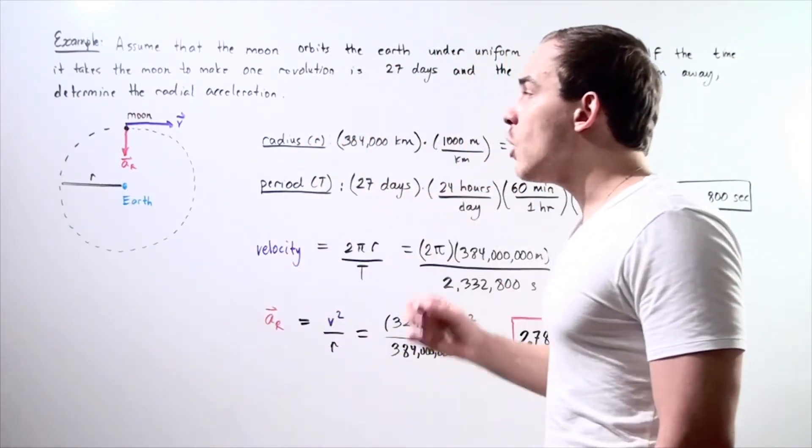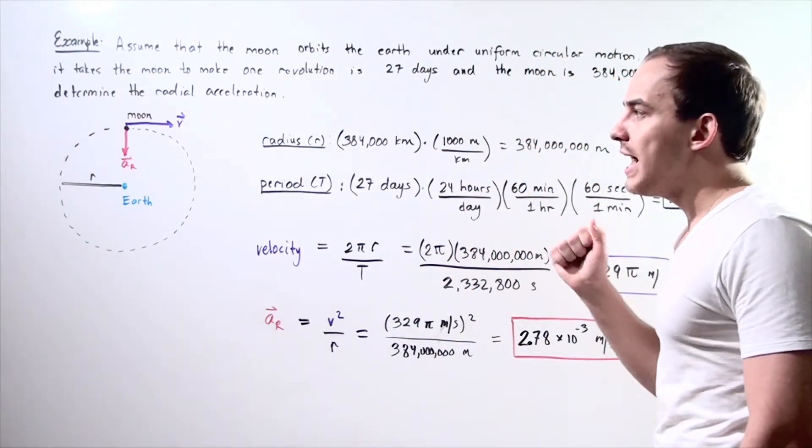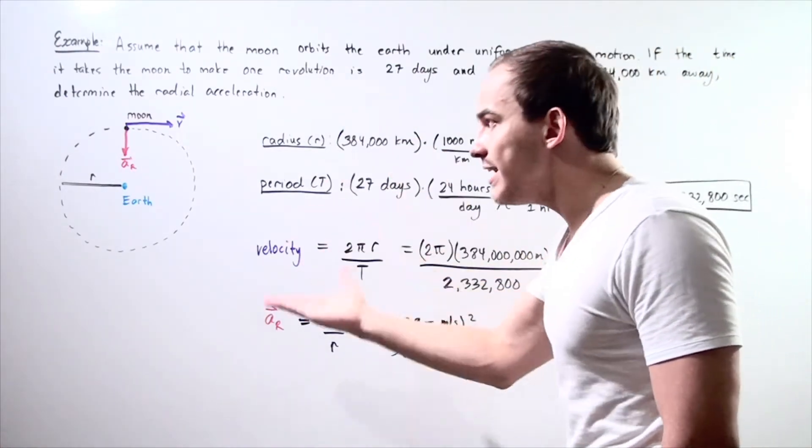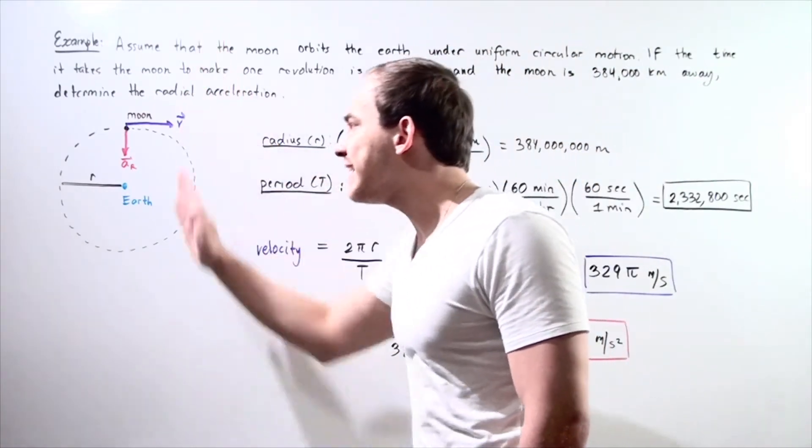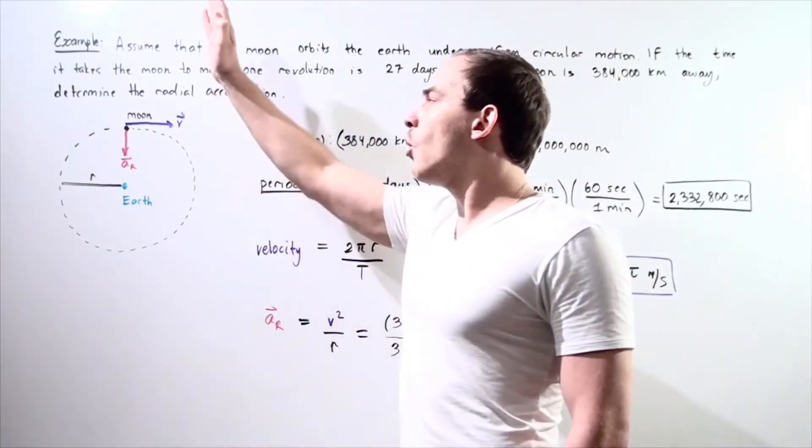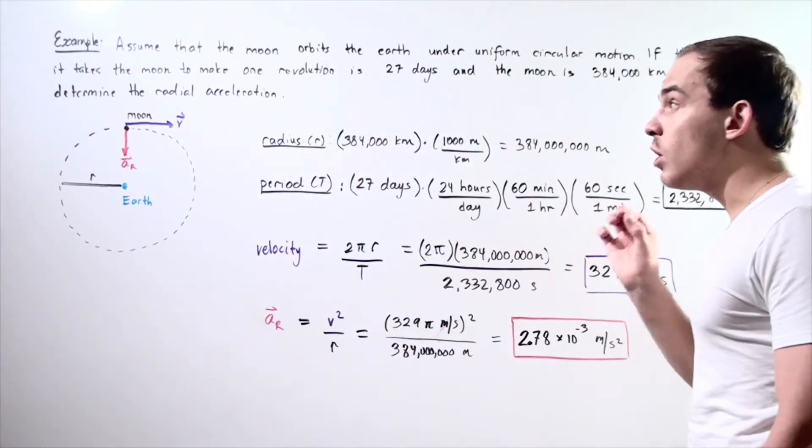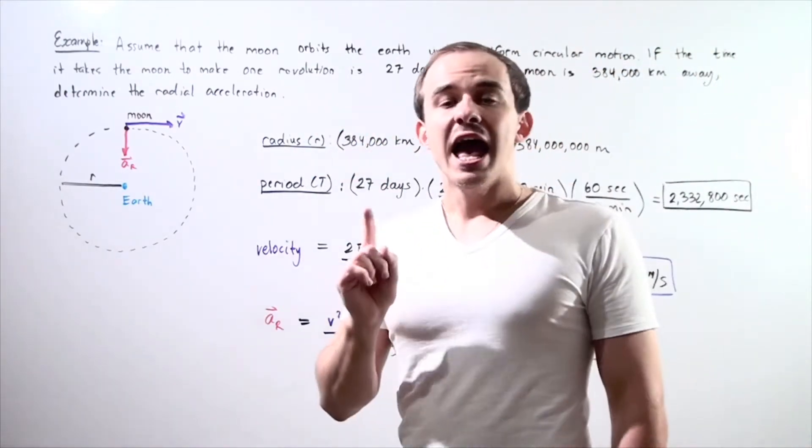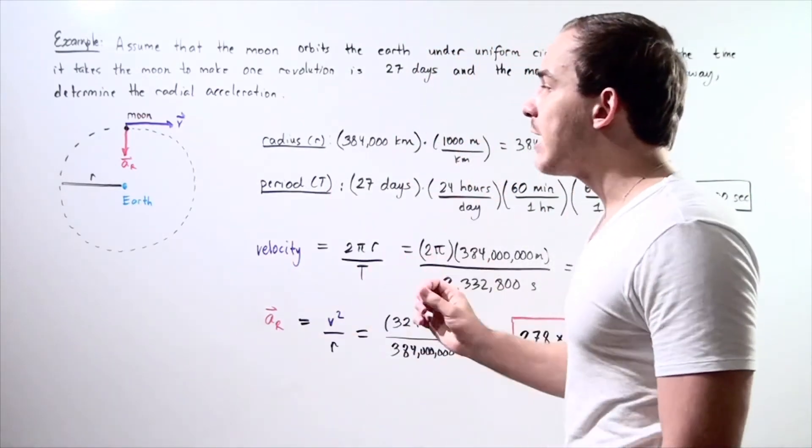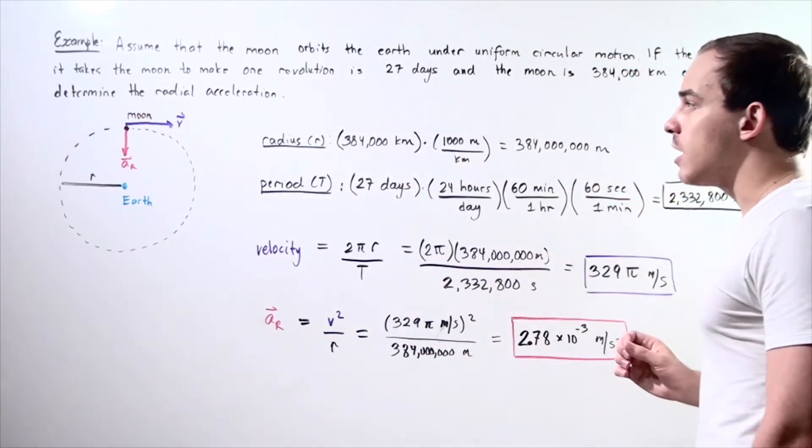Now, we know the velocity is tangent to the pathway, and our acceleration, the radial acceleration, is perpendicular to the pathway. It points directly to the Earth from the Moon. We want to first find what the velocity is, and then use that to find our radial acceleration of the Moon.